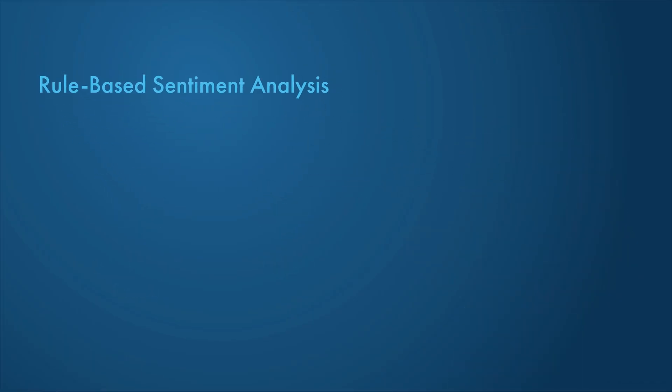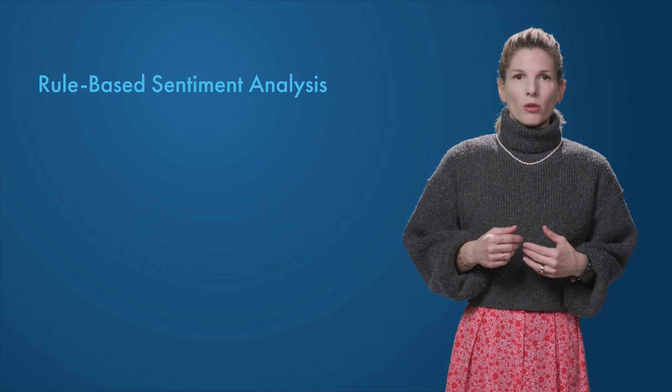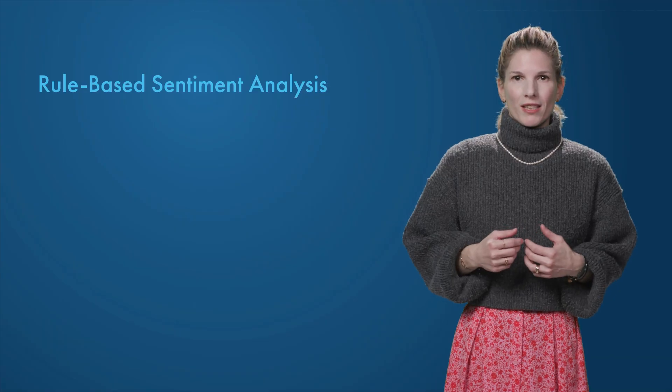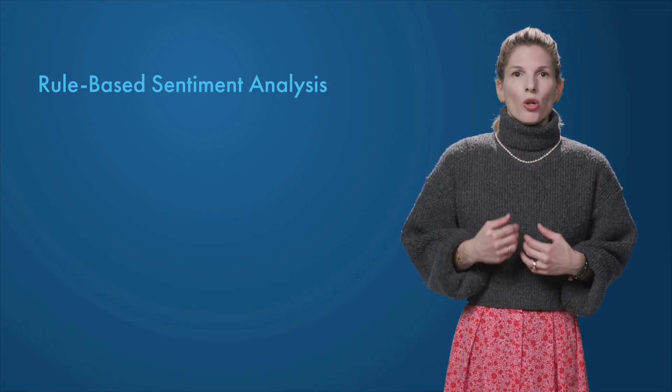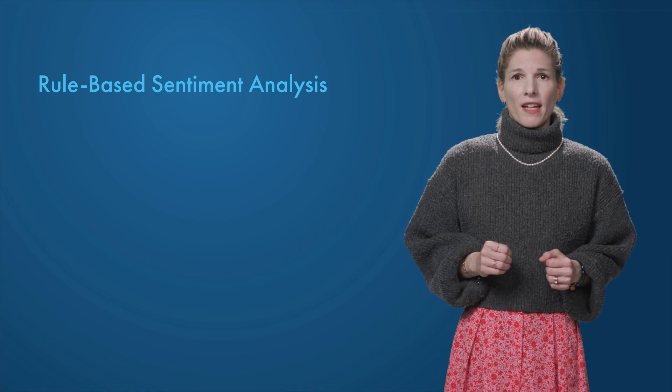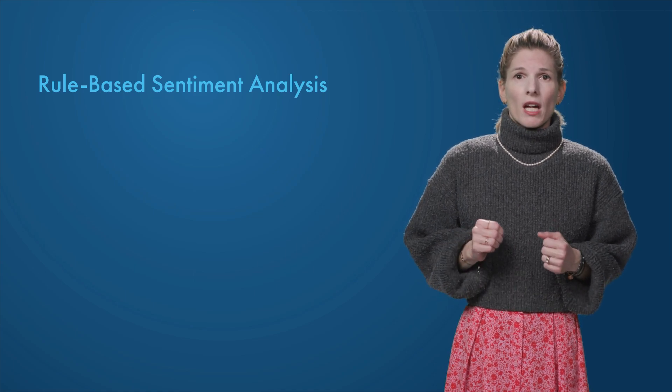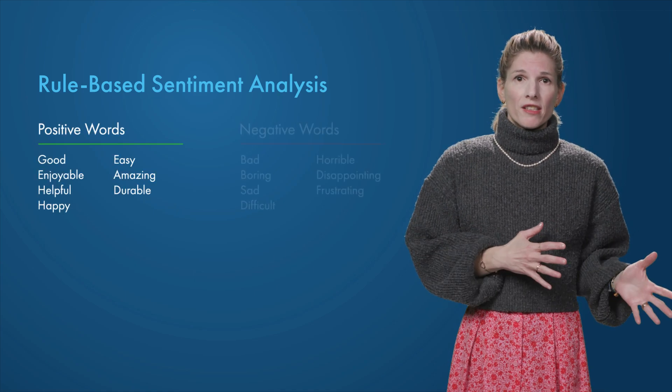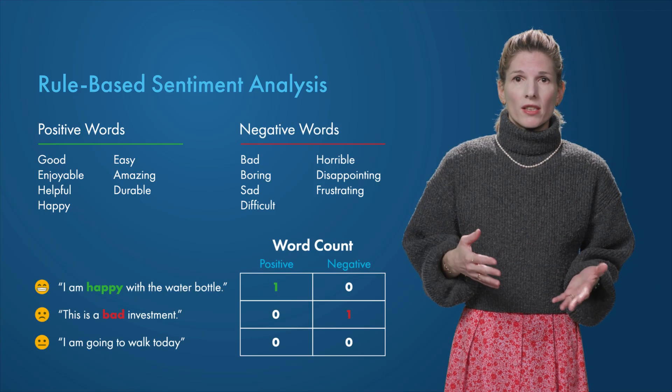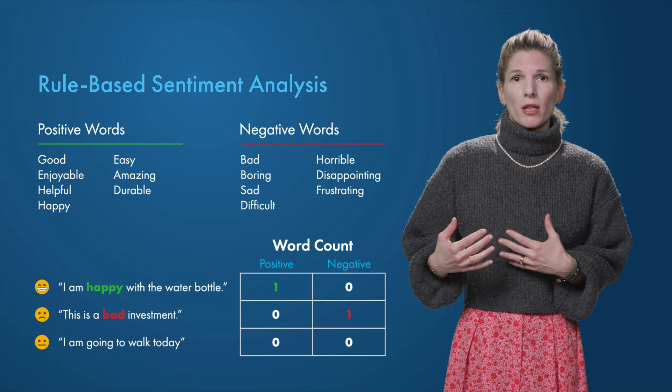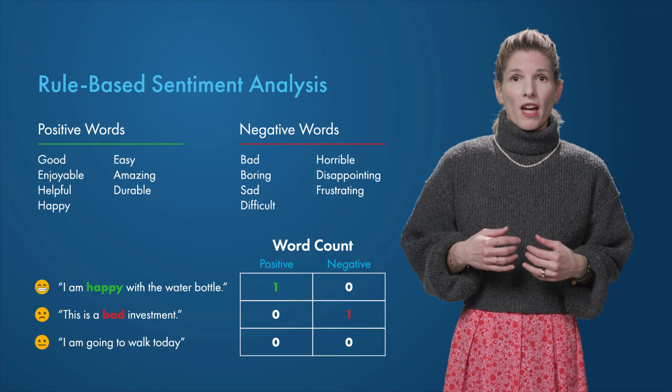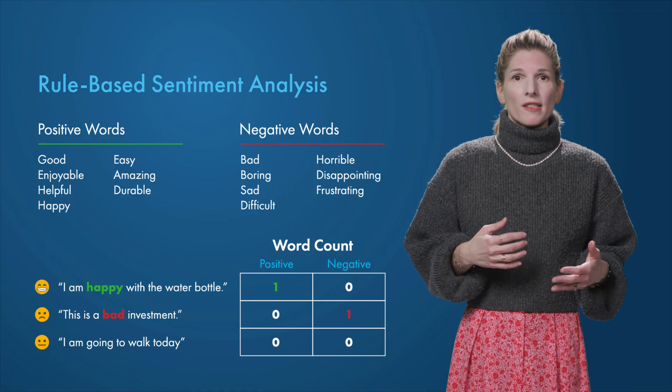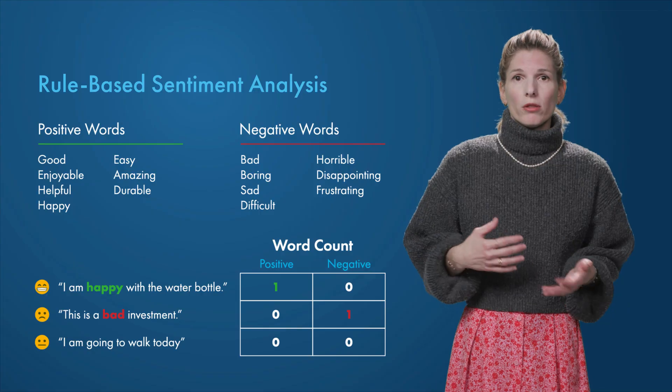In rule-based sentiment analysis, the algorithm automatically labels input data based on a set of predefined rules. Rule-based systems are simple to understand and implement, as simple as compiling a list of positive and negative words and then counting how many times these words appear in the text. More elaborate rule-based systems have been developed, but they still lack in flexibility compared to AI models.